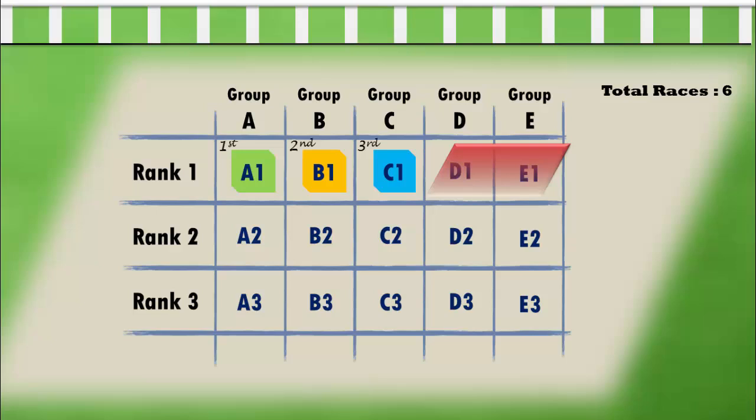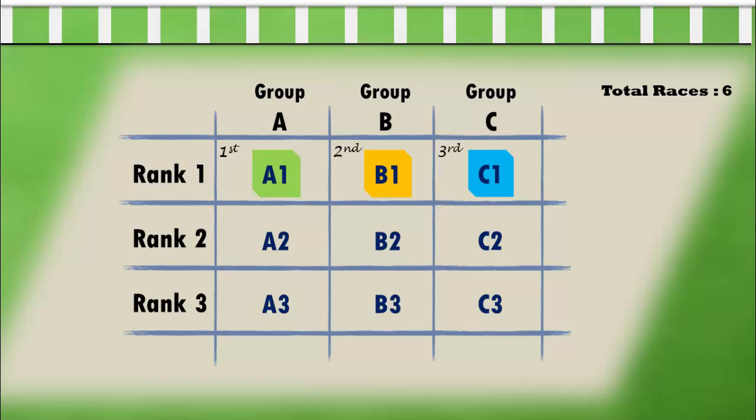And we know that D2 and D3 are slower than D1, so they are also going to be eliminated. Similarly, E2 and E3 are eliminated. The tricky part now is to eliminate some more horses from this table before moving on to the next race.